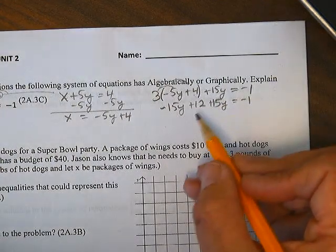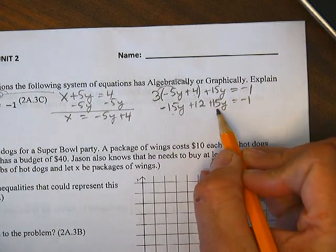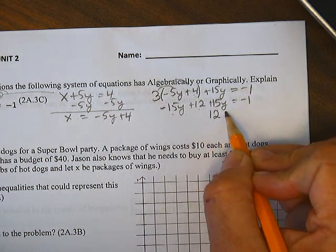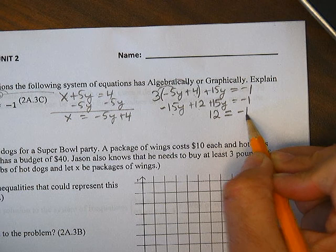Combining my like terms, I have negative 15y plus 15y. So that's 0 plus 12. So 12 equals negative 1?